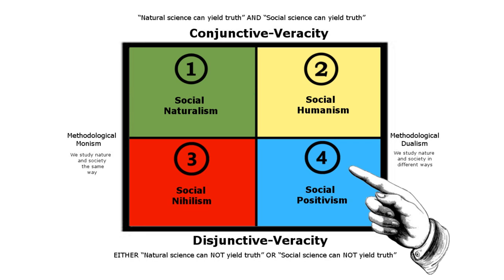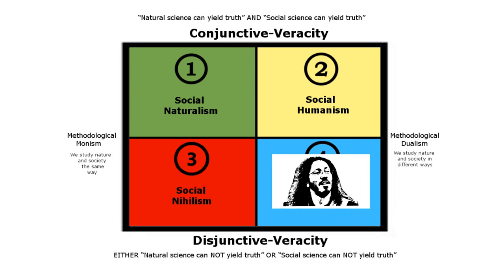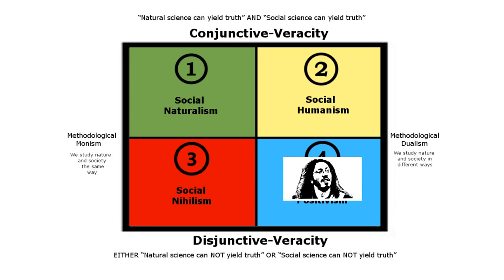The final option, social positivism, claims that the study of society and the natural sciences have different methods, but that only one of them yields truth. This would be the position of those like Thunderfurt, for example, who seems to hold that social science is a misnomer — that its expressions, like those of the natural sciences, are more like poetic incantations than a sober pursuit of truth.